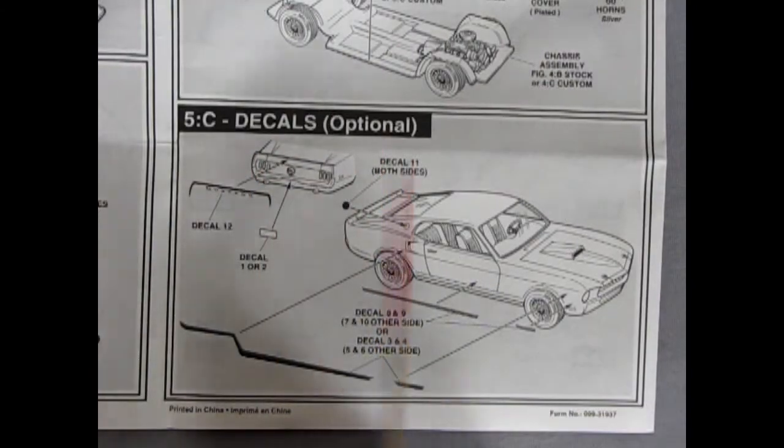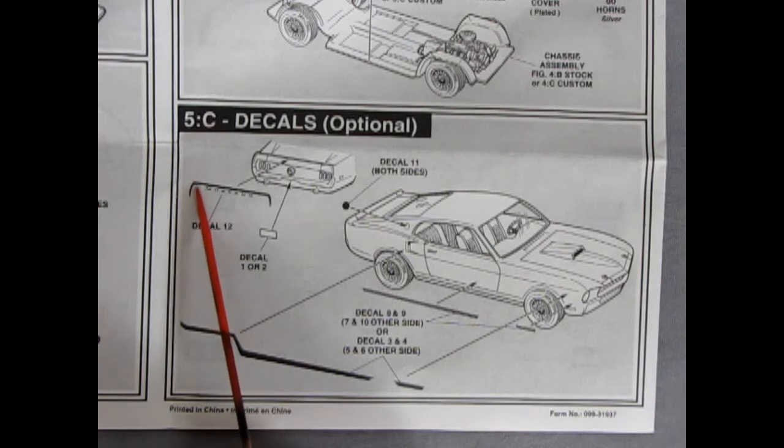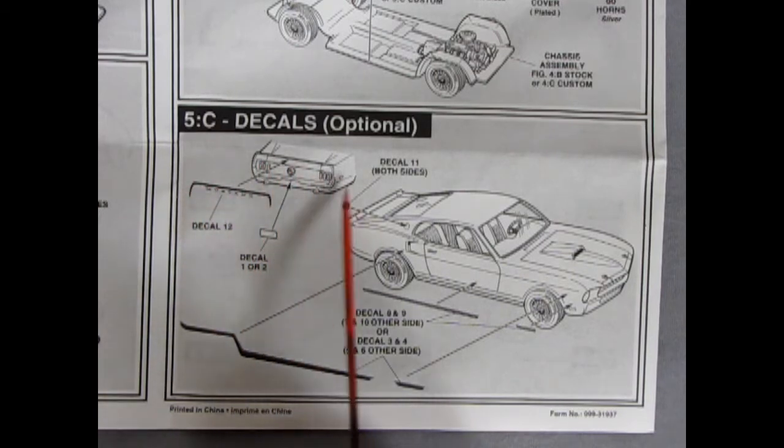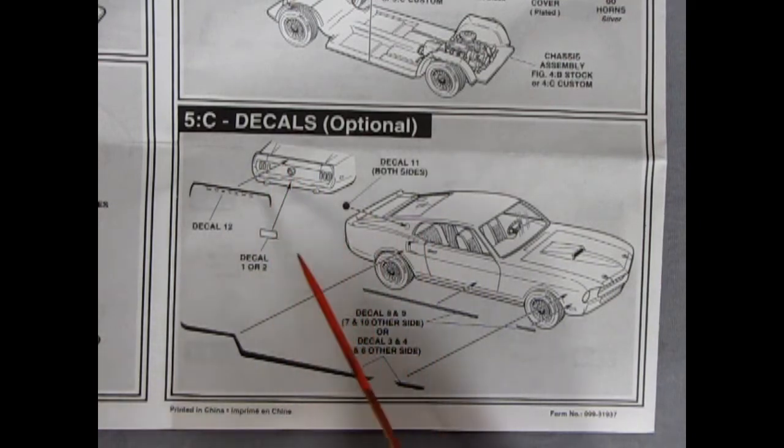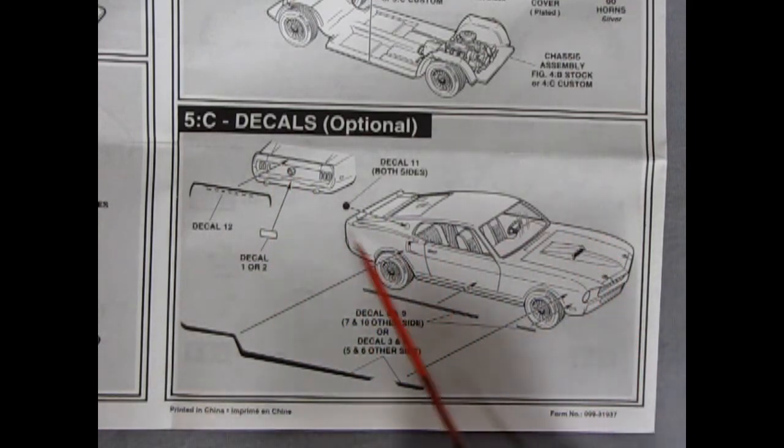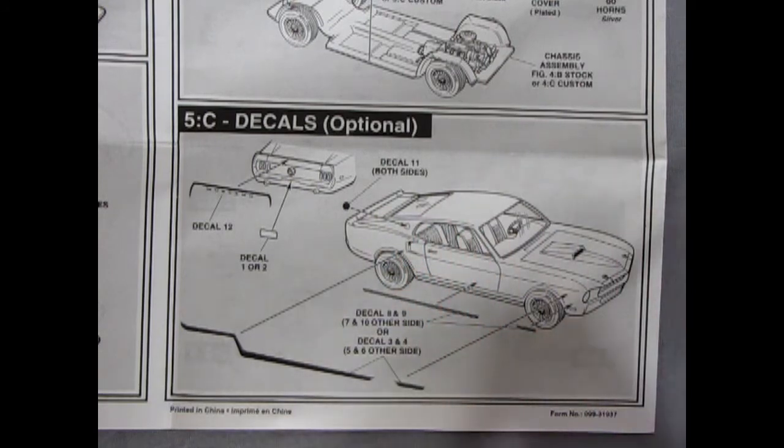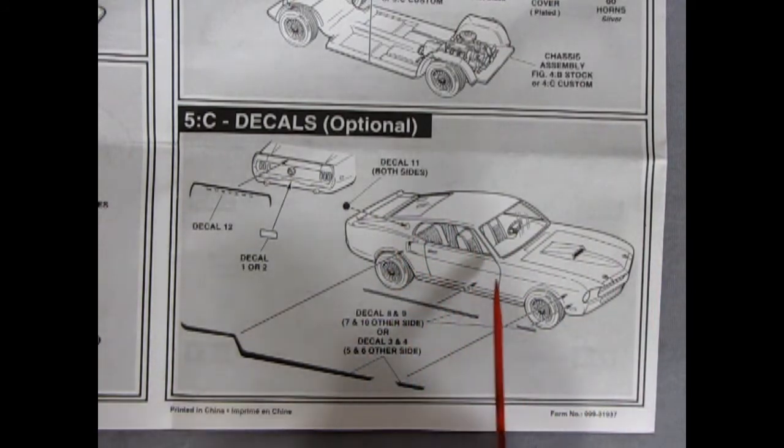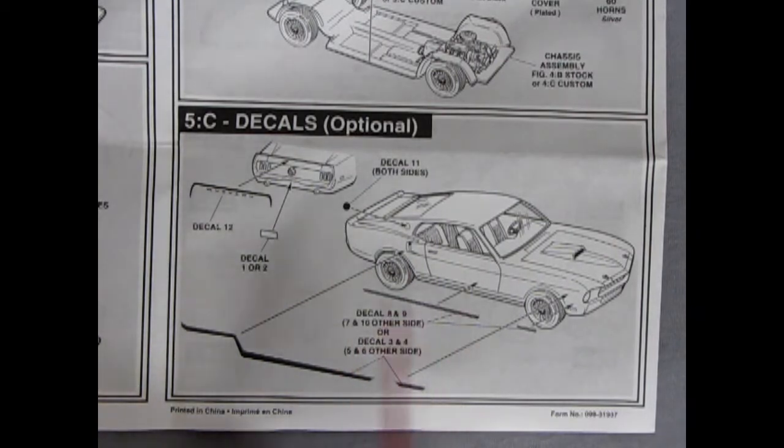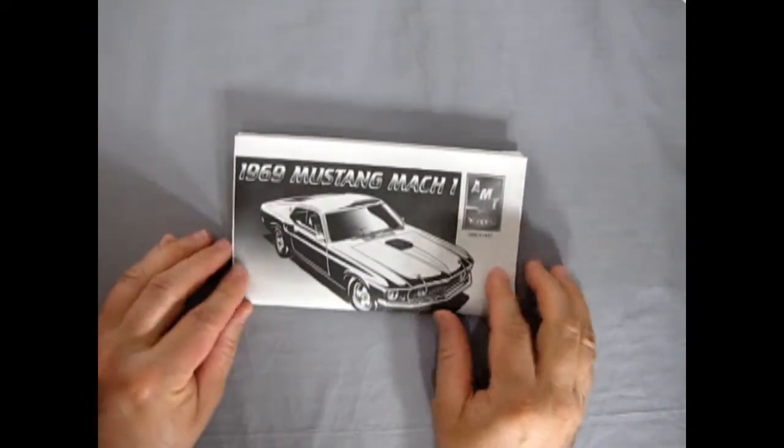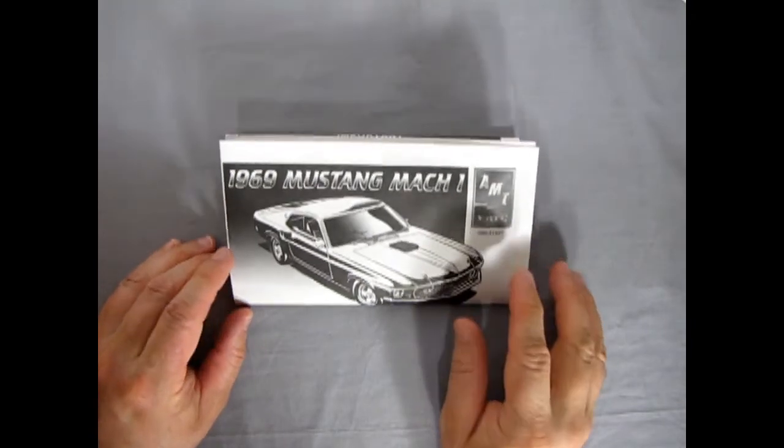Finally, we have our decals, which are optional. And here we've got decal number 12, which is a nice pinstripe that goes along the top of the spoiler with Mustang as a decal in there. That's why they said to sand it off if you're going to use it. And then you've got your license plate gluing on there. There's a decal that goes on there on both sides. And then there's some nice striping that'll go onto your car as well. There's one up top and one down below. It's all dependent on what you want to do. And we'll figure it out when we see our instruction sheet, our decal sheet. And that completes our look at the Mustang Mach 1 instruction sheet by AMT Ertl.